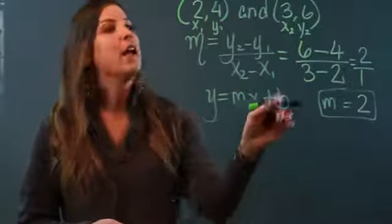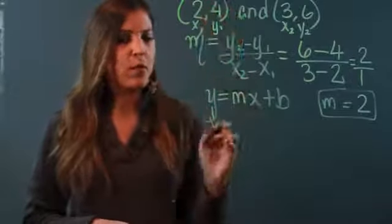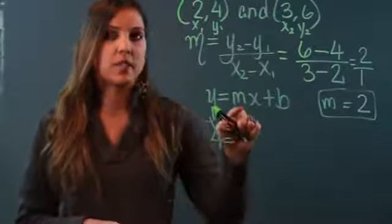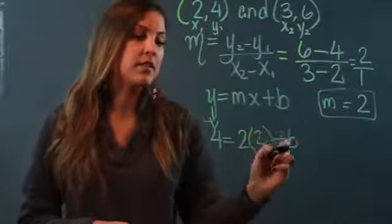I'm going to substitute y with 4, because in this ordered pair my y is 4, equals, I'm substituting m with 2 because I found out my slope was 2, open a parenthesis, I'm going to substitute x with 2, plus b. And now I'm just going to solve for b.